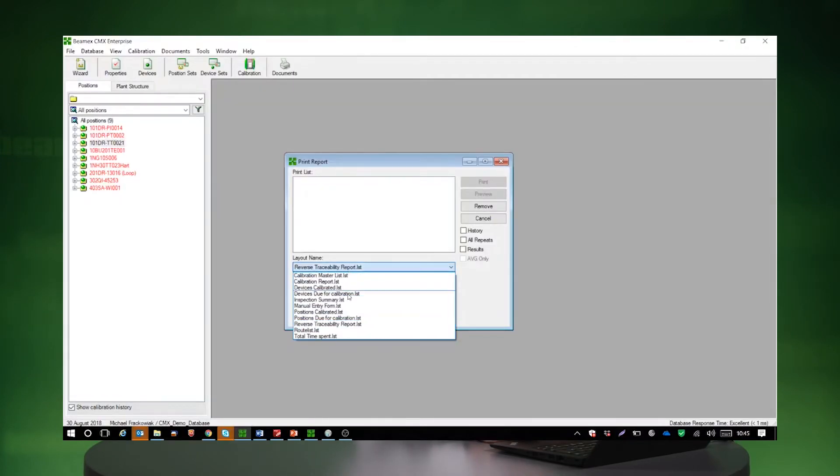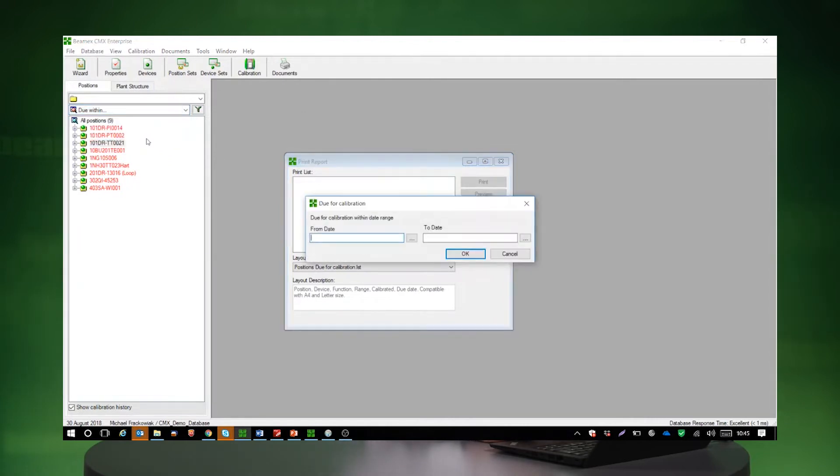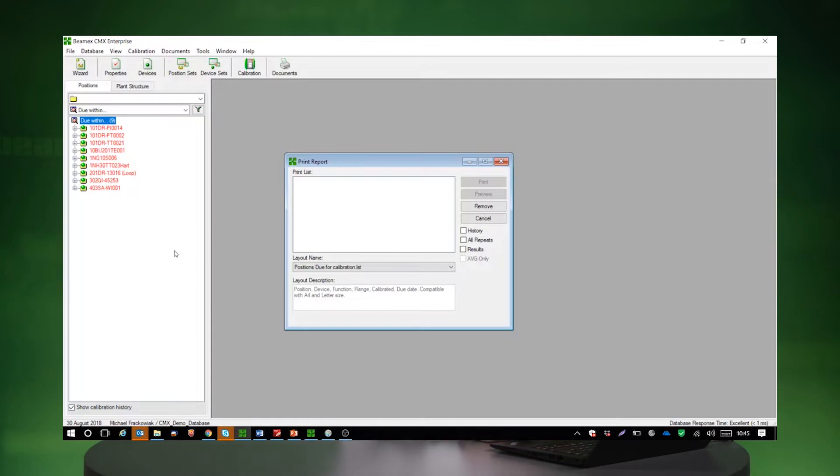Next up is positions due for calibration report. So if I select that, positions due for calibration report, and let's say I can also go by date and I can say due within maybe from 1st of the 1st 2010 till now. So I can filter the results and now I can drag and drop them onto my report box.